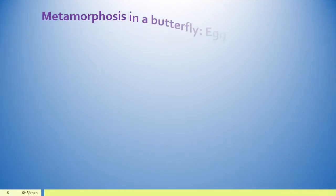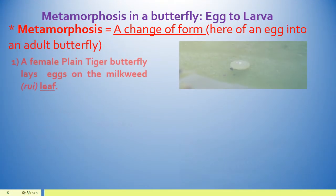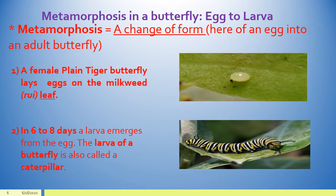We will now learn about the metamorphosis in a butterfly. Butterflies of various shapes and beautiful colors are part of our environment. They live their life among plants. As butterflies grow, they pass through four stages: egg, larva, pupa, and adult stage — that is called a butterfly. Let us look at an example of a plain tiger butterfly. A female plain tiger butterfly lays its eggs on the milkweed, that is a Rui leaf.